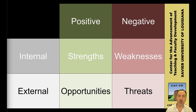SWOT analysis originated in the 1960s at Stanford University under Albert Humphrey, who led a research project to understand why corporate planning failed. The method was developed as a way to assess and enhance organizational performance, evolving into a widely used tool across industries.